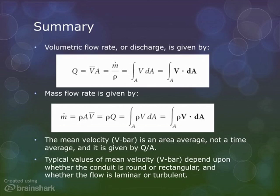Mass flow rate is given by m dot, which is equal to rho times area times the average velocity, which is equal to rho times Q. And again, you may have to do an integral where you multiply the density times V dot dA.